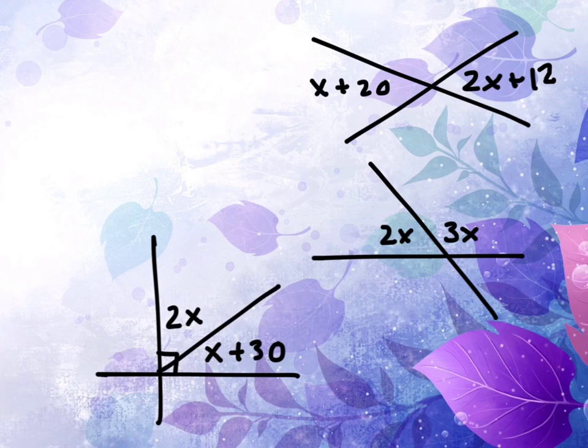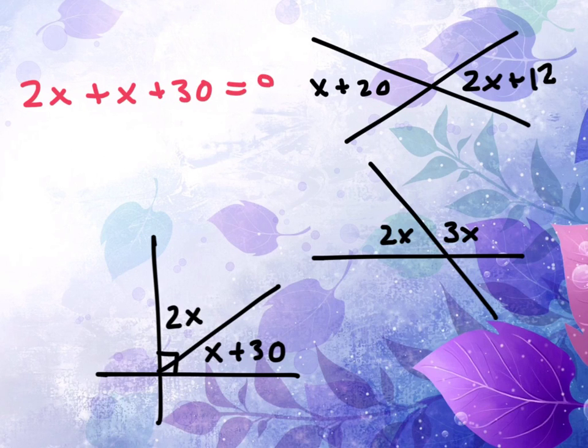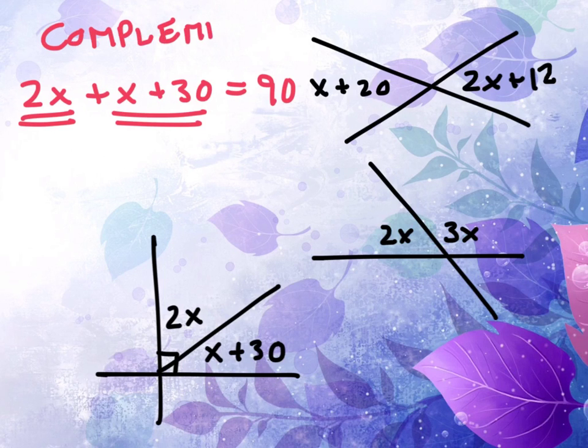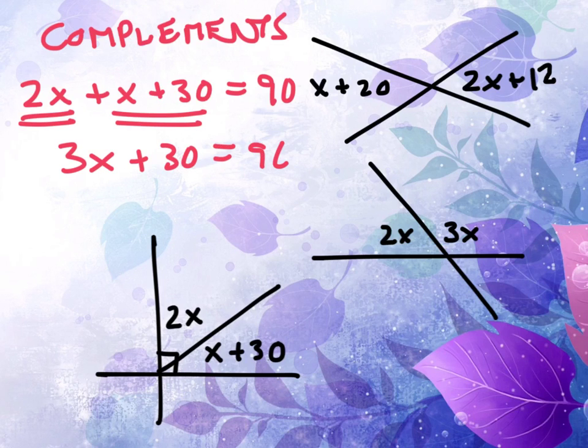The last one you'll notice is a set of complement angles. So we will say that 2x and x plus 30 together equal 90. So this angle and this angle together equal 90. That's because they are complements. Two angles that sum to 90. And so we get 3x plus 30 equals 90. We get 3x equals 60. And x equals 20.